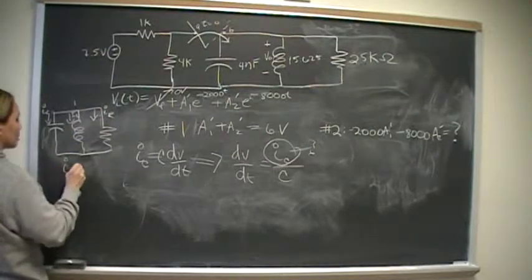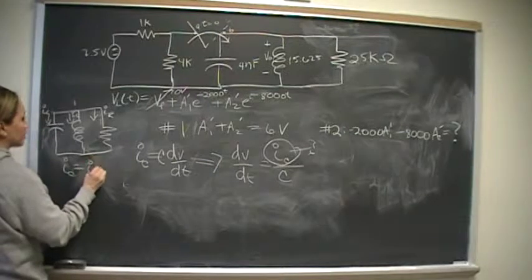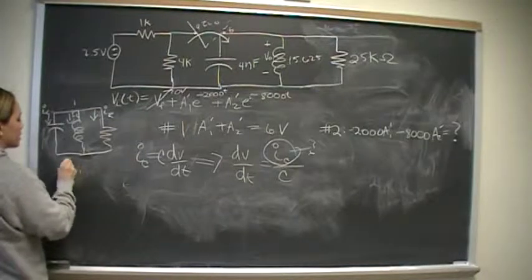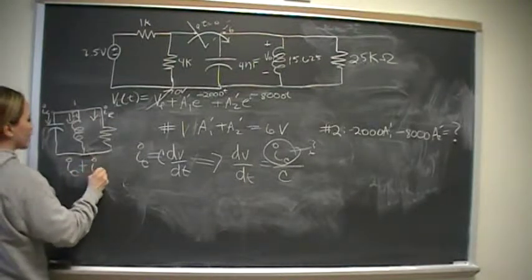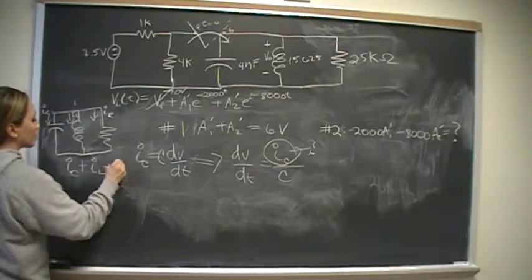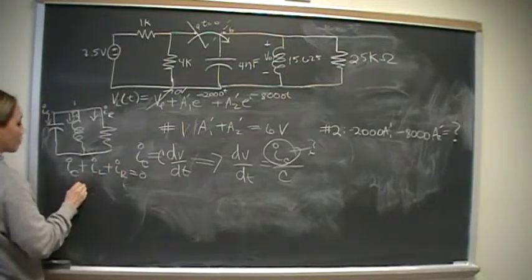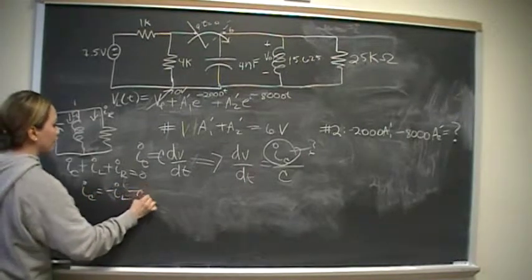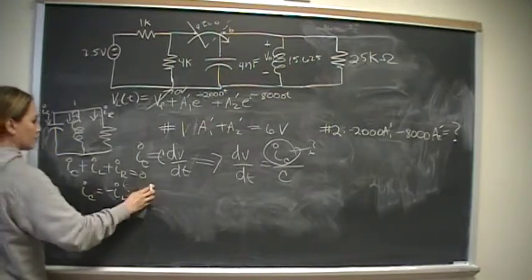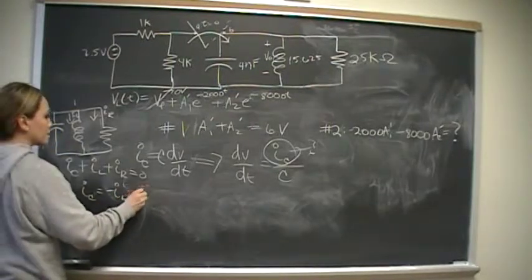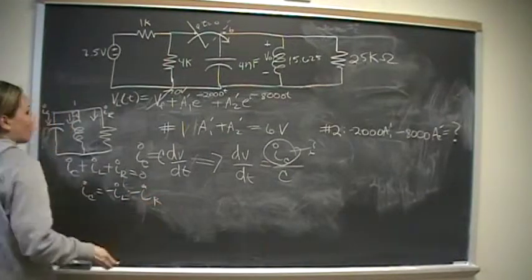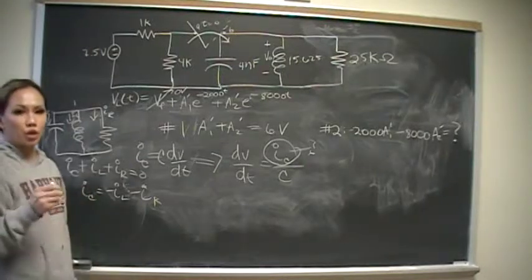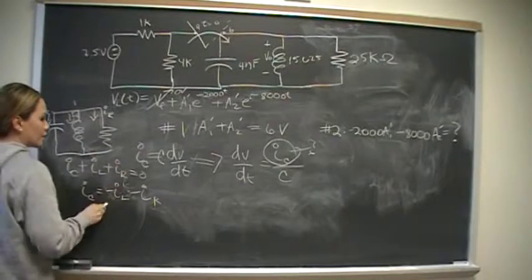Sorry about this, guys. KCL says I C plus I L plus I R is equal to zero. Therefore, I sub C is equal to negative I sub L minus I sub R. Well, the inductor has no initial stored energy, and when the switch flips, inductors can't change current instantaneously. Therefore, that is zero.